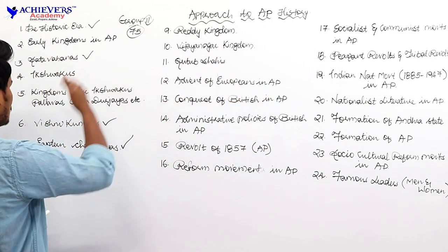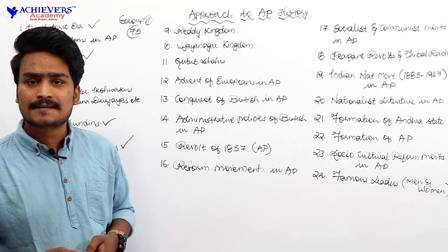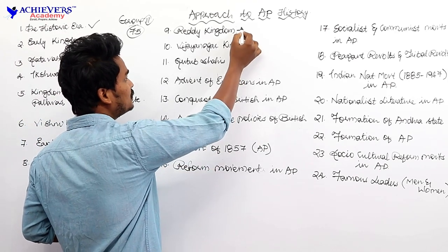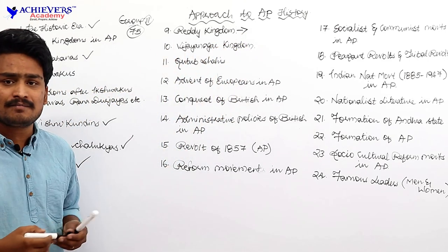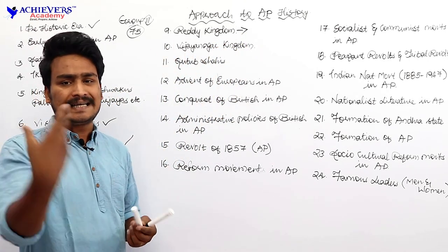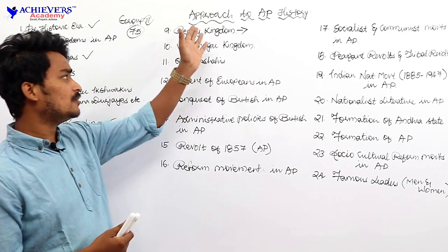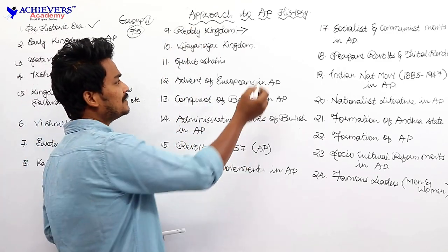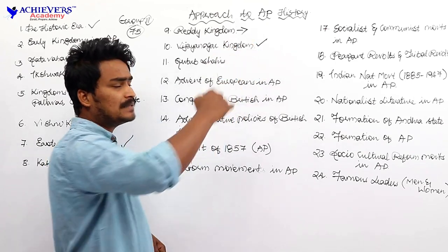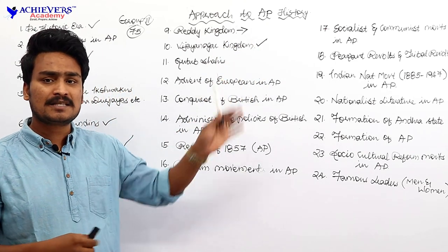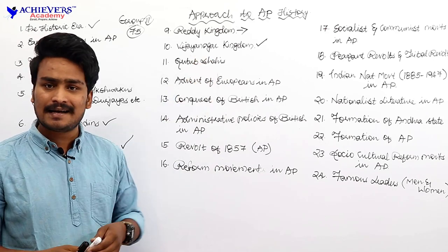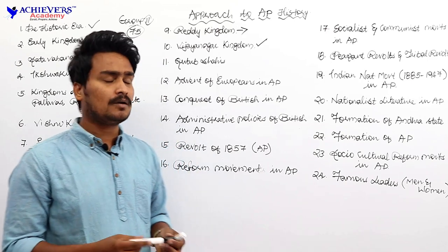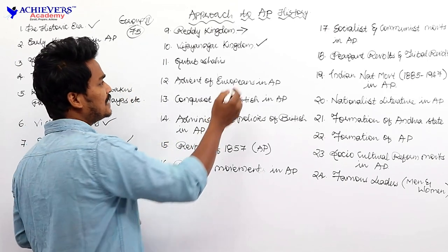After the decline of Kakatiyas, there was an important kingdom established — the Reddy Kingdom. We should learn about Reddy Kingdom. After the decline of Reddy Kingdom, there is the most important kingdom — the Vijayanagara Kingdom — with whom the famous personality Sri Krishna Devaraya is associated. We should learn about the Vijayanagara Kingdom.